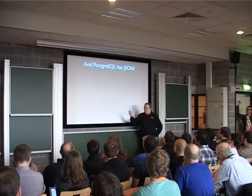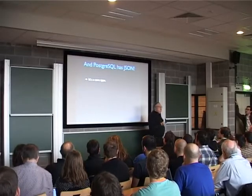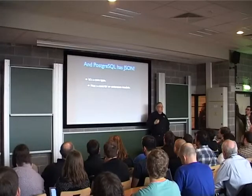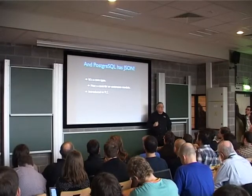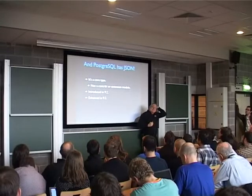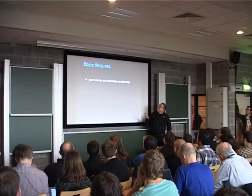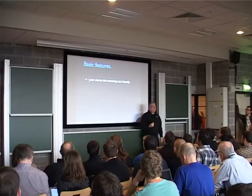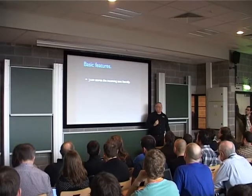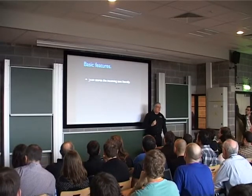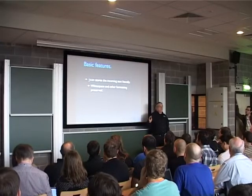Now the subject of the talk: Postgres has JSON. It's a core type — it's not a contrib module, it's not an extension. You get it when the system starts up. It was first introduced in 9.2 and enhanced significantly in 9.3. The basic type stores the incoming text literally. So you pass in a JSON blob, it goes into the database exactly the way it is. You present it character for character. The white space and other formatting is all preserved in the JSON type, so it comes out exactly the way it went in.